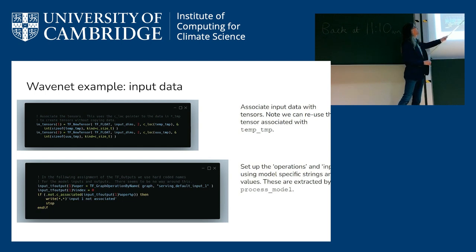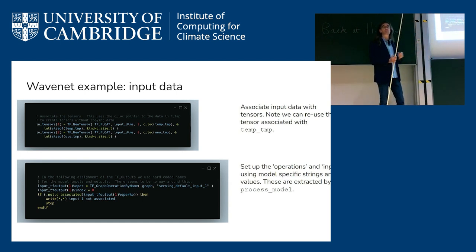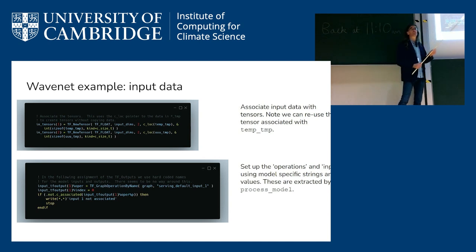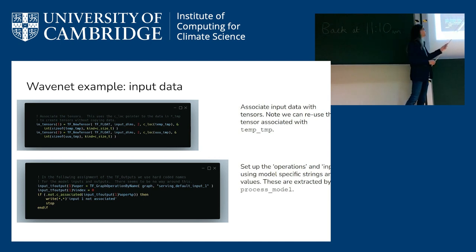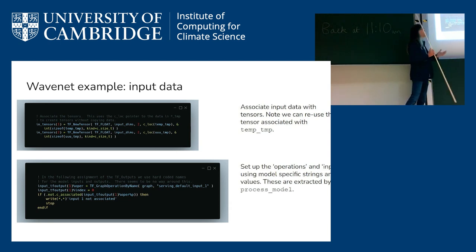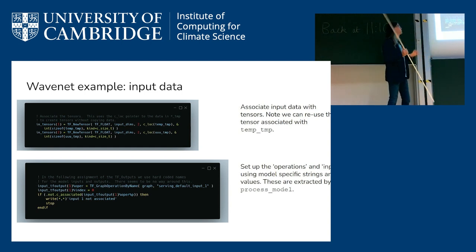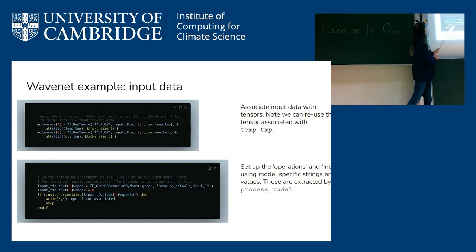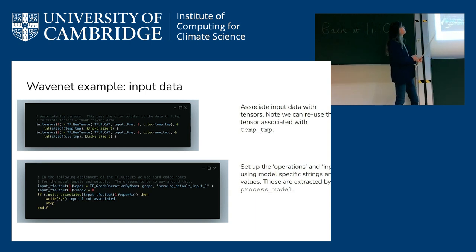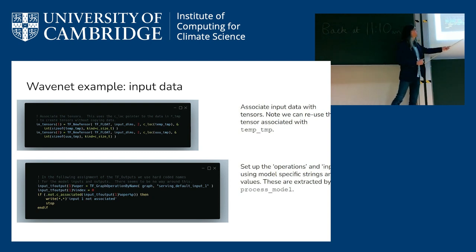For the input data, we have a TF_new_tensor call which returns a TF tensor Fortran type. I'm using C_LOC to pass in a C pointer to a Fortran array. There is a way of passing in a Fortran array directly and having the TF tensor code generate the requisite pointer itself, but that requires a Fortran 2018 feature which isn't widely supported — so this is overloaded. It's a no-copy call, so this just gives you basically a reference within the tensor to that data. I have two of them because this particular model takes two inputs.